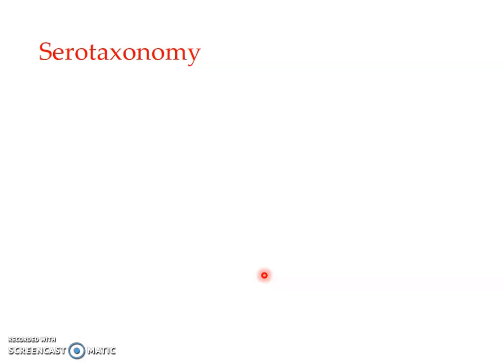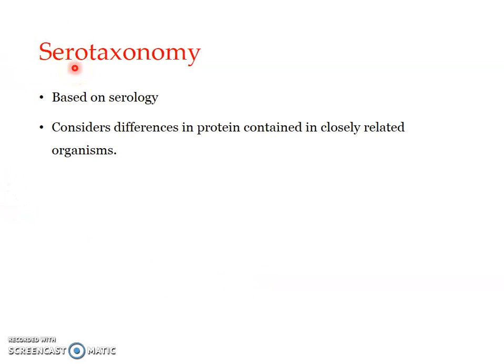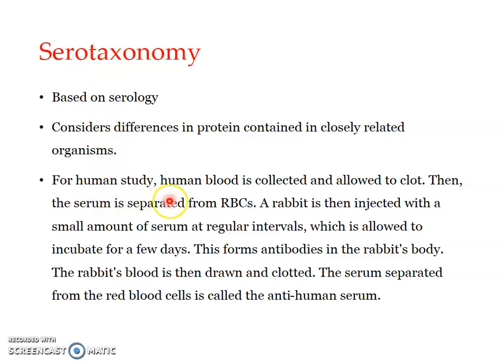The next system is serotaxonomy. 'Sero' refers to serum, and it is based upon serological studies. It involves studying differences in proteins present in the organisms being classified. The closeness of proteins indicates the closeness among the species. As an example: human blood is collected and allowed to clot, and then the serum is separated. A rabbit is then injected with the serum at regular intervals, leading to the formation of antibodies in the rabbit's body.